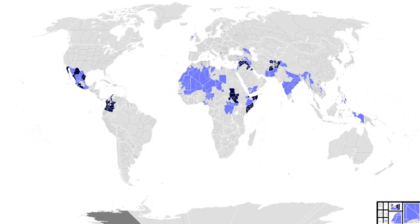Propaganda is an ancient form of disinformation concerned with sending a set of messages aimed at influencing the opinions or behavior of large numbers of people. Instead of impartially providing information, propaganda presents information in order to influence its audience. The most effective propaganda is often completely truthful, but some propaganda presents facts selectively to encourage a particular synthesis, or gives loaded messages in order to produce an emotional rather than rational response. The desired result is a change of the cognitive narrative of the subject in the target audience.